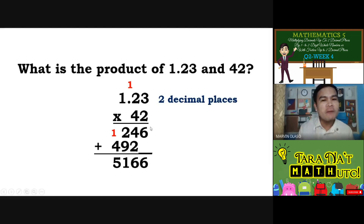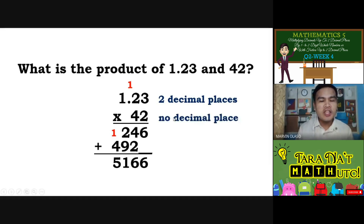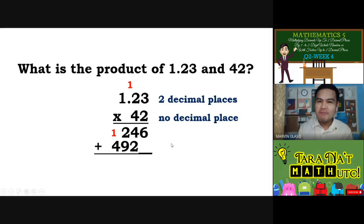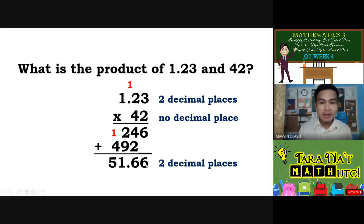The numbers being multiplied are called factors. Since we have only 2 decimal places, don't forget to put the decimal point in the final answer. We are going to put that decimal point 2 decimal places from the right. So, what's the final answer? We have 51 and 66 hundredths — kasi 2 decimal places. From here, 1, 2 — dun mo ilalagay ang decimal point.